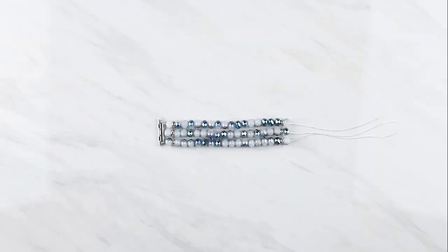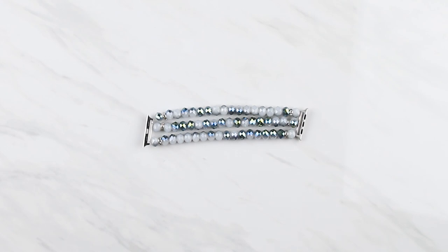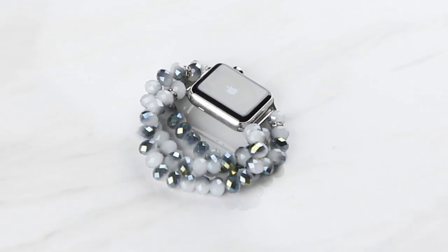When you're done, it should look like this. Snug up the cord and use a stretch cord knot to attach it to the corresponding spots on the spring bar.